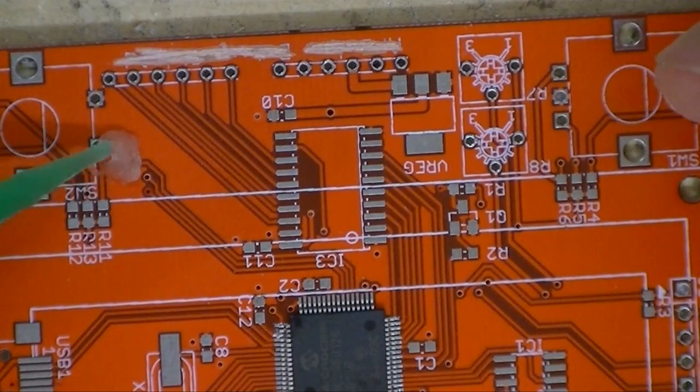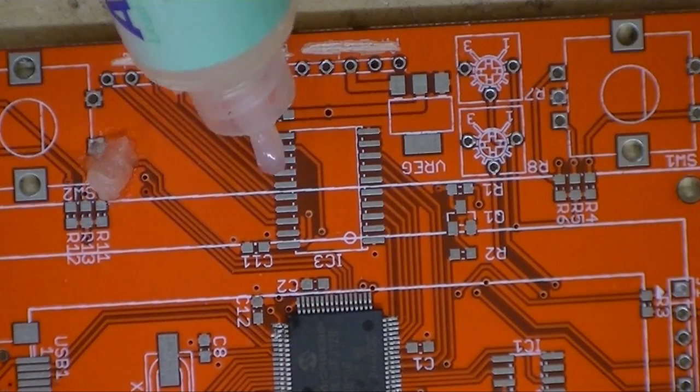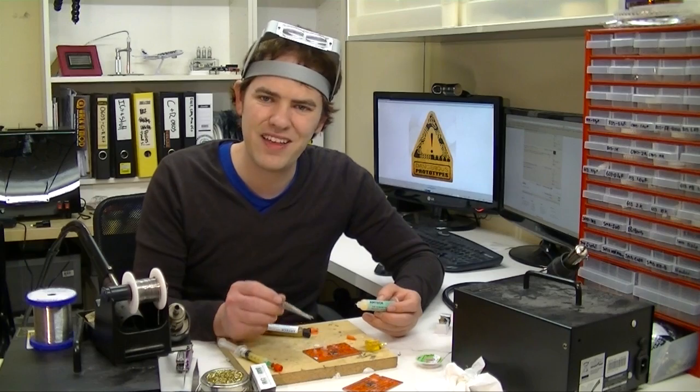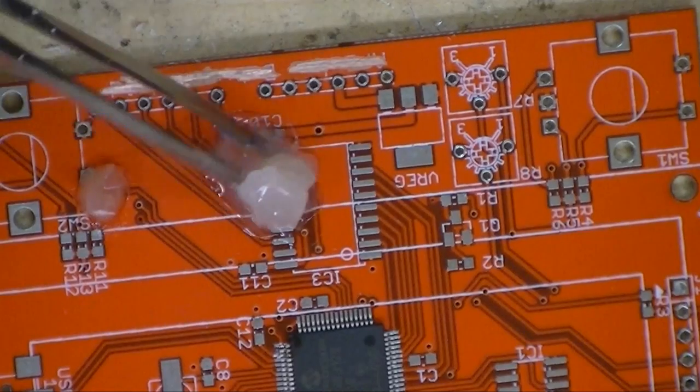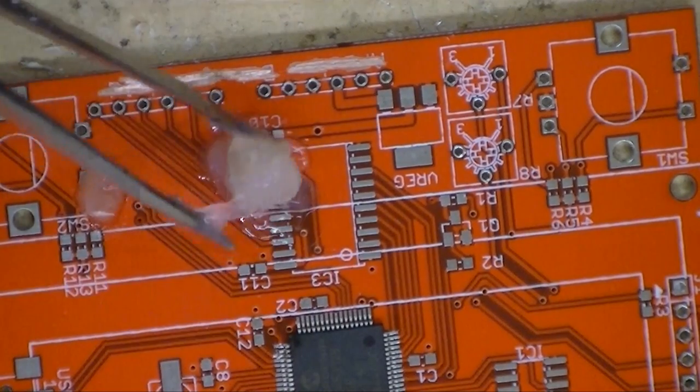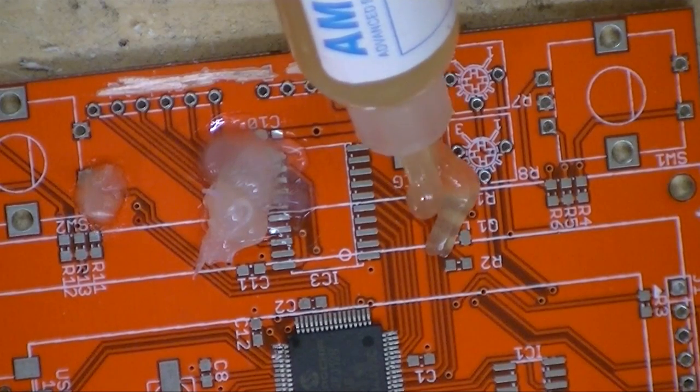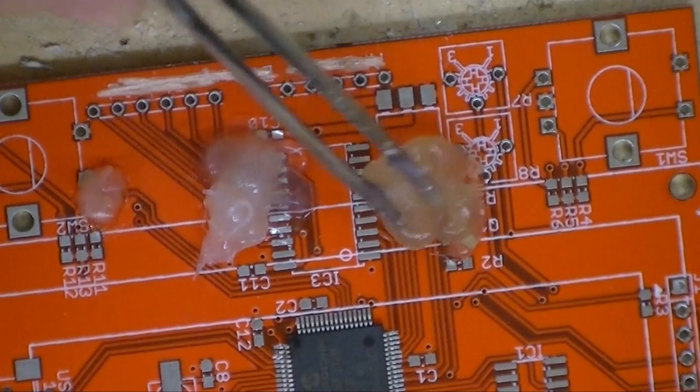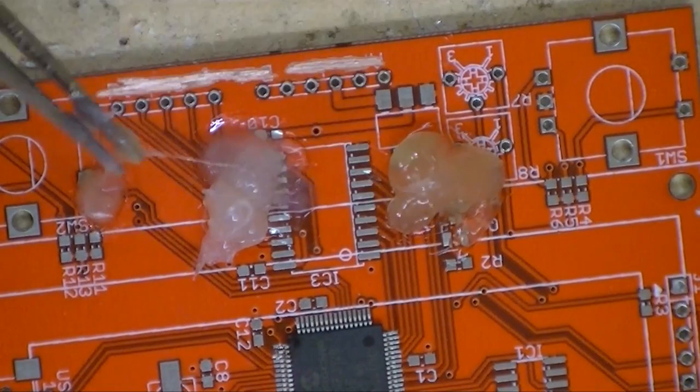First we're going to squirt out a little bit of each flux syringe onto the PCB to compare the texture. Here's the Edson. It's about the texture of petroleum jelly. This is the first Amtech flux that says made in the USA. This one's a lot goopier, and it leaves a lot more of a liquid residue behind. And finally some of the Chinese made Amtech flux. This is a lot thicker. This isn't as goopy. This is a lot more like the Edson in texture.